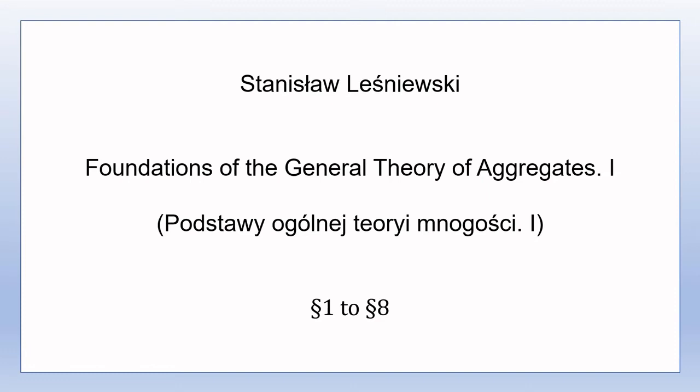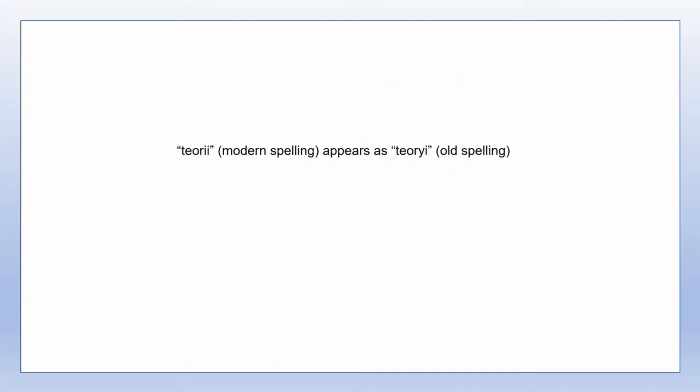For those watching this who already have some familiarity with the Polish language, you might notice an error on the title screen for this video. The original text of Leśniewski, being written in around 1916, uses an older system of spelling, and I use this older system of spelling in this video. For example, 'Teorii' — the current spelling with an I — appears in the old spelling with a Y, and similarly 'Axiomat' with a J appears also with a Y in the old spelling. These differences in spellings don't make the least bit of difference to the work itself, and don't affect the pronunciation of the words involved.